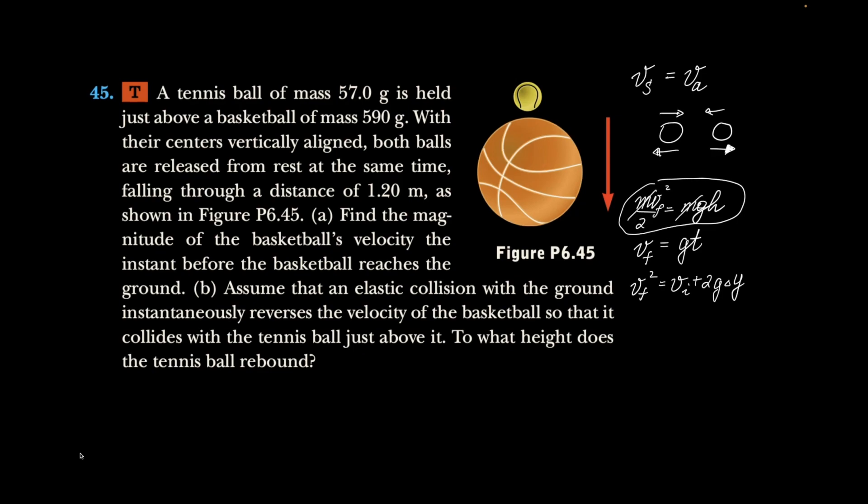Now through conservation of energy or through kinematics we will find our v_final to be the root of 1.2 times 19.6. That gives us 4.85 meters per second. They tell us that the basketball rebounds without any loss of energy.